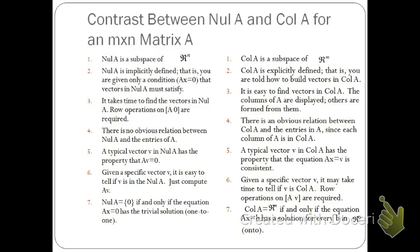This chart gives us a contrast between the null of A and the column of A for an m by n matrix. For instance, the null of A is a subspace of Rⁿ while the column of A is a subspace of Rᴹ. You can go through the chart to see the comparisons and contrasts between the null space and column space.